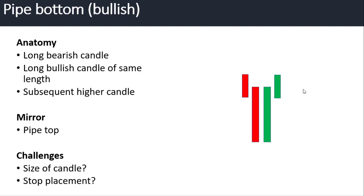Looking at this, there are a couple of challenges. First of all, what size of candle do we mean by long? Is it two times the ATR of the particular time frame you're looking at? And secondly, where do we place our stop? It may be that these candles are so long that if we aim to place our stop below them, that could result in a smaller position or a larger loss. So that's something you need to consider.